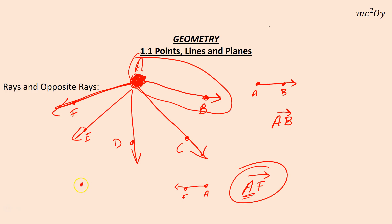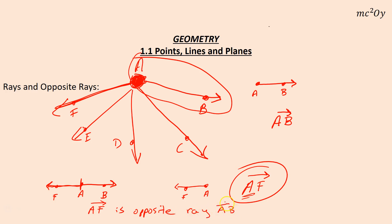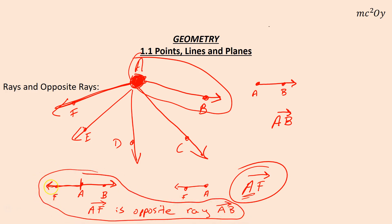The last thing is opposite rays. If I have a ray going one way — say ray AB — and another moving the opposite way from the same point — ray AF — since they both start at A, ray AF is the opposite ray of ray AB. These opposite rays actually form a line, which takes us full circle. All right, that's it — points, lines, and planes. Pretty cool stuff.